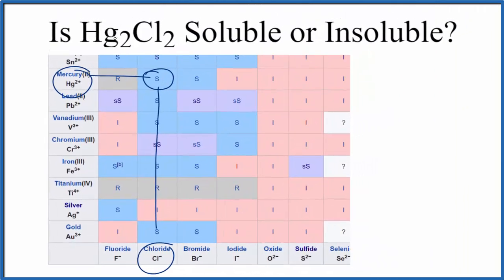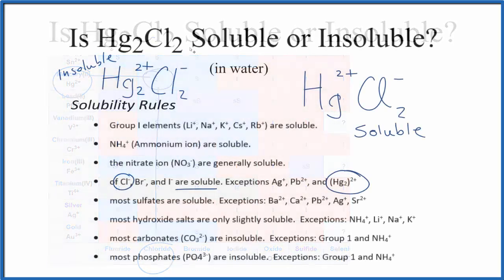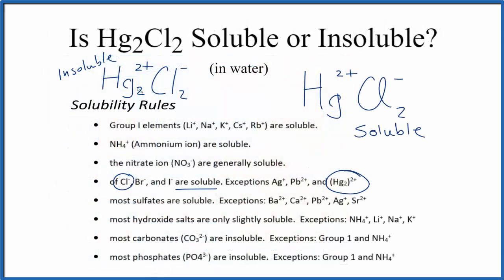But this mercury 1, Hg2Cl2, is insoluble. So to recap, we have this Hg2Cl2. This is mercury 1 because we have two mercury atoms, and the whole thing has a 2+ charge, so each one is 1+. Mercury 1 chloride, Hg2Cl2, insoluble. Mercury 2 chloride, where we have this 2+ on just one mercury atom, is soluble in water.